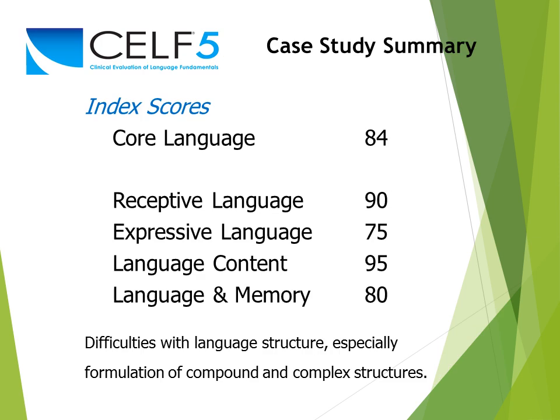On CELF-5, the core language score was 84 — low-level normal. Receptive language is 90, expressive language is 75, and there is a significant discrepancy between receptive and expressive. Language content is 95, and language memory is 80. We see the working memory component as a limitation, but language content is a strength. However, remember that CELF-5 tests the concrete level of language comprehension.